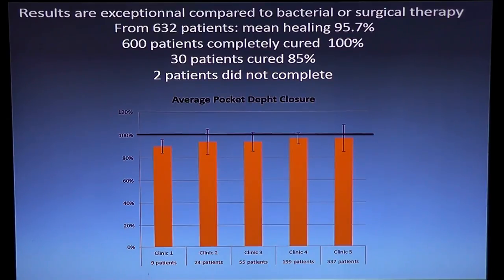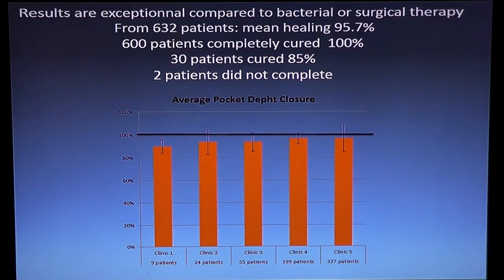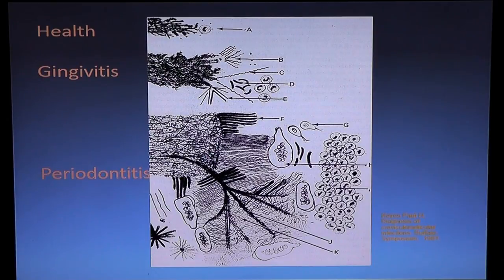The result of this anti-parasitic technique compared to bacterial treatment or even surgery is completely different. Looking at those 600 patients who have been treated, mean healing — closing pockets without surgery, without surfacage, without deep scaling, just removing the bugs, disinfection, very light detartrage, no sharp curettes — we see general healing of 95.7%. No more pockets, no more bleeding. Most patients, about 90%, are completely cured — 100%. This is a very exceptional and effective method: microscope and removal of parasites.